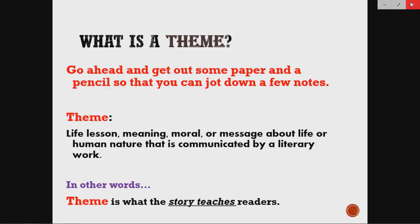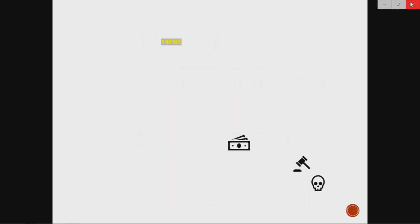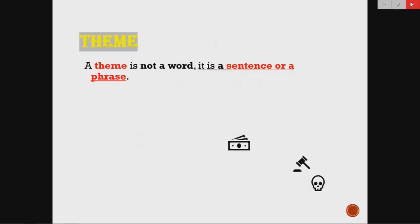In simpler words, theme is what the story teaches the reader — that's what we're really going to focus on. What is the story teaching you as the reader? Now let's talk about how we identify a theme. A theme is never going to be one word. It is always going to be a sentence or a phrase. I tell the kids in my class that if you're taking a standardized test and one of the options is one word, that's not it. It will always be a sentence or a phrase.